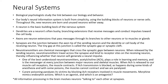Dendrites are part of the neuron — the bushy, branching extensions that receive messages and different impulses. Axons are neuron extensions that pass messages through branches to other neurons, muscles, or glands. Synapses are the junction between an axon tip of the sending neuron and the dendrite or cell body of a receiving neuron. The tiny gap at this junction is the synaptic gap, sometimes called the synaptic cleft.